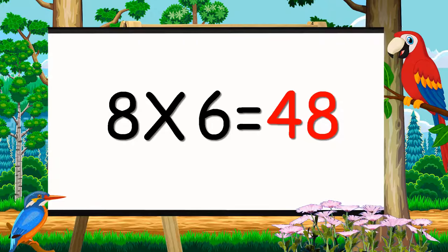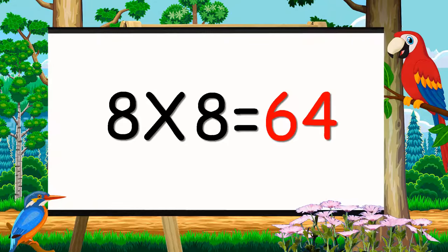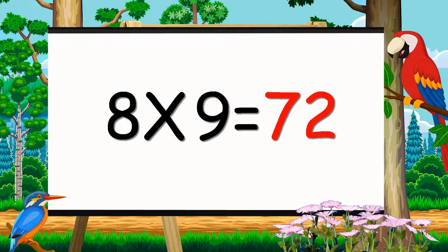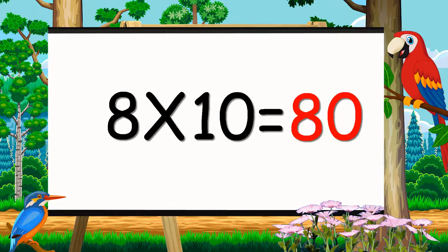8 sixes are 48. 8 sevens are 56. 8 eights are 64. 8 nines are 72. 8 tens are 80.